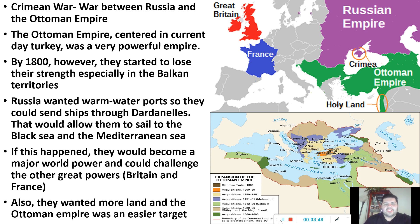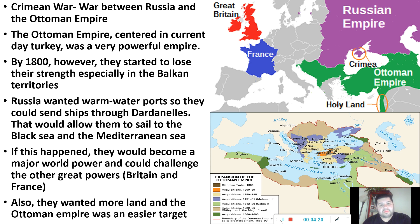Russia also just wanted more land. The Ottoman Empire, because they were losing strength, became an easy target. It's like those nature videos — when lions or tigers go after an animal in a pack, they don't go after the strongest one, they go for the weakest or the injured one, because that's the easy kill. That's the case here: the Ottoman Empire is weaker, sicker, injured — and Russia sees an opportunity.